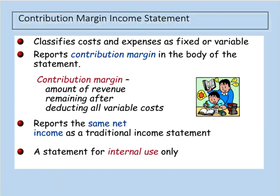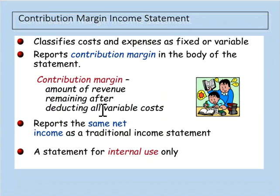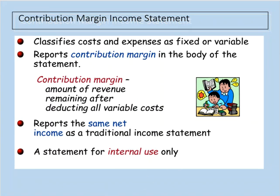A contribution margin income statement classifies costs and expenses as fixed or variable and reports contribution margin in the body of the statement. Contribution margin is calculated by taking all revenue and subtracting all variable costs. From contribution margin, you then subtract fixed costs, which typically gives you the same net income as a traditional income statement — assuming units produced and sold are the same.